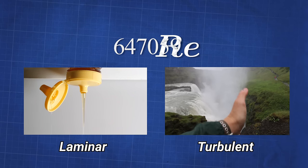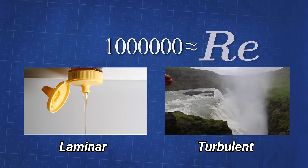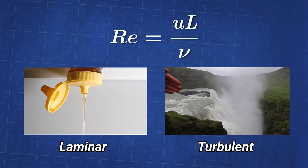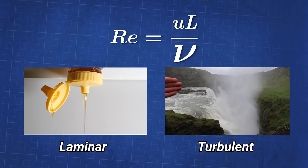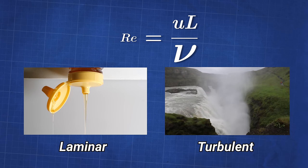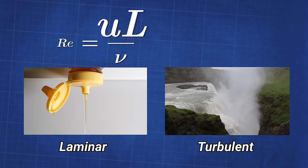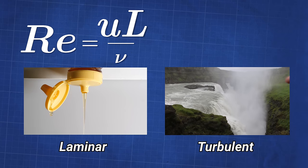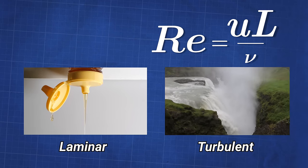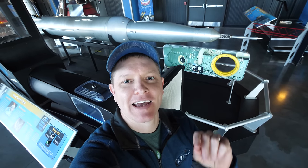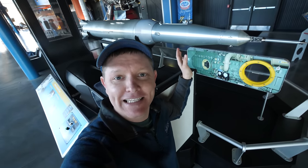A low Reynolds number means that the flow is more laminar — and in my opinion more awesome. A high Reynolds number means it's more turbulent. If you have more viscosity, Reynolds number gets smaller, therefore the flow is more laminar. But if you increase the velocity or size of the flow, Reynolds number gets bigger and you have more turbulent flow. If you keep Reynolds number and Mach number the same, you can make a model of whatever you're trying to fly and get a good idea if turbulence or laminar flow will happen over the model.